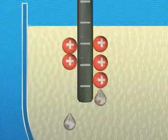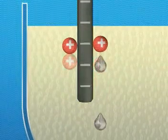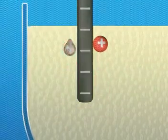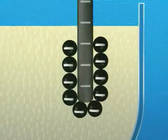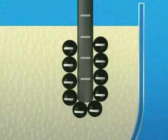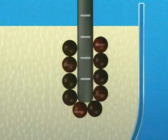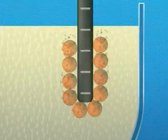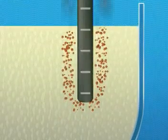Lead ions pick up electrons. They lose their positive charge and form lead atoms. Bromide ions give up electrons. They lose their negative charge and become bromine atoms. These form a gas.